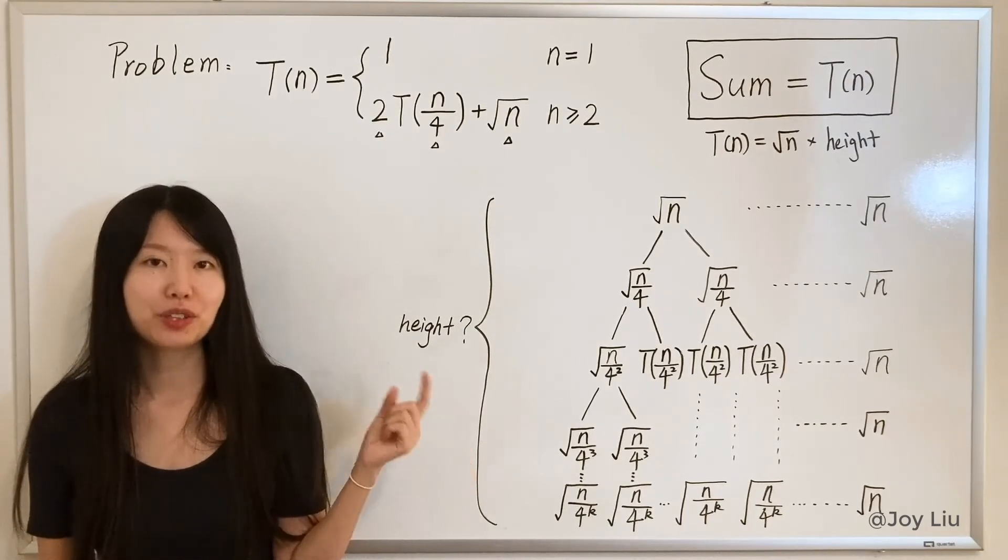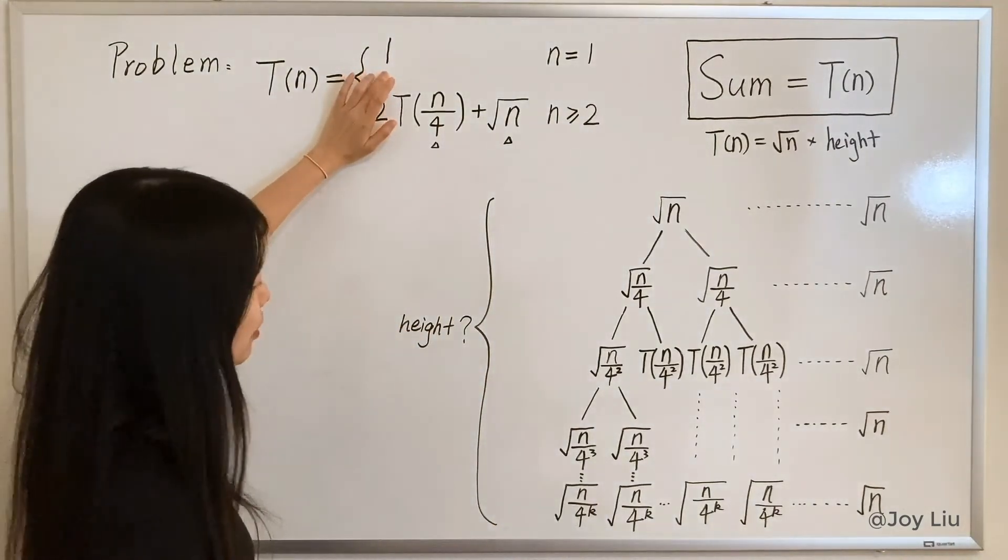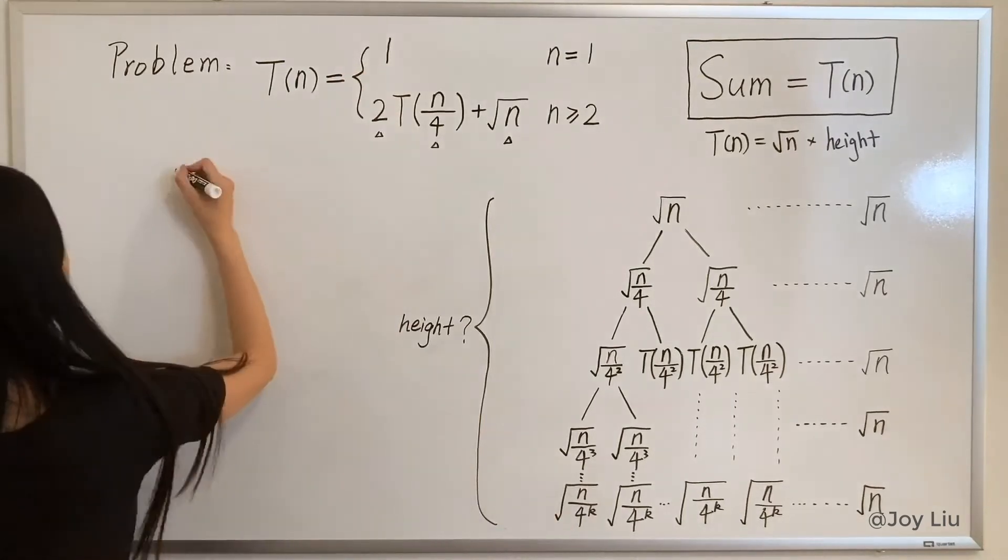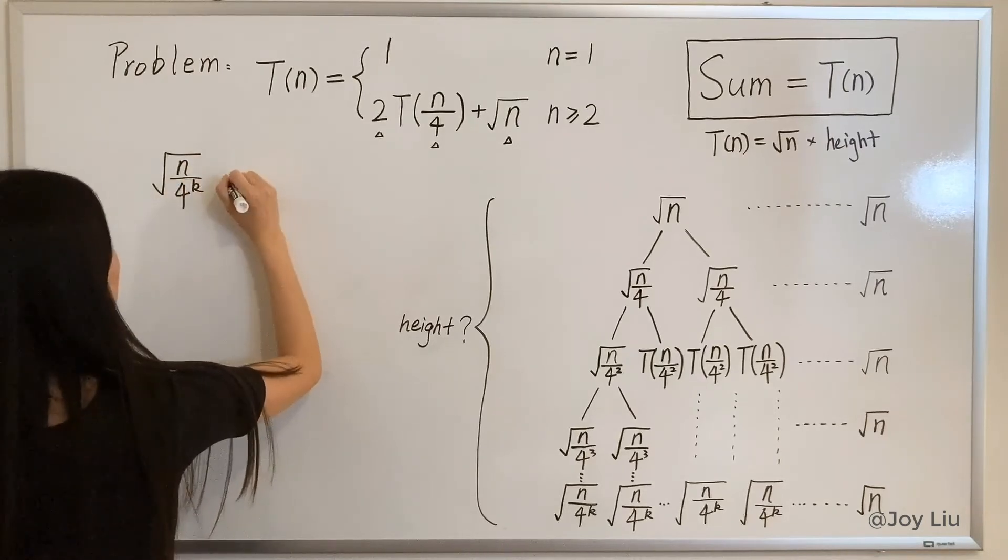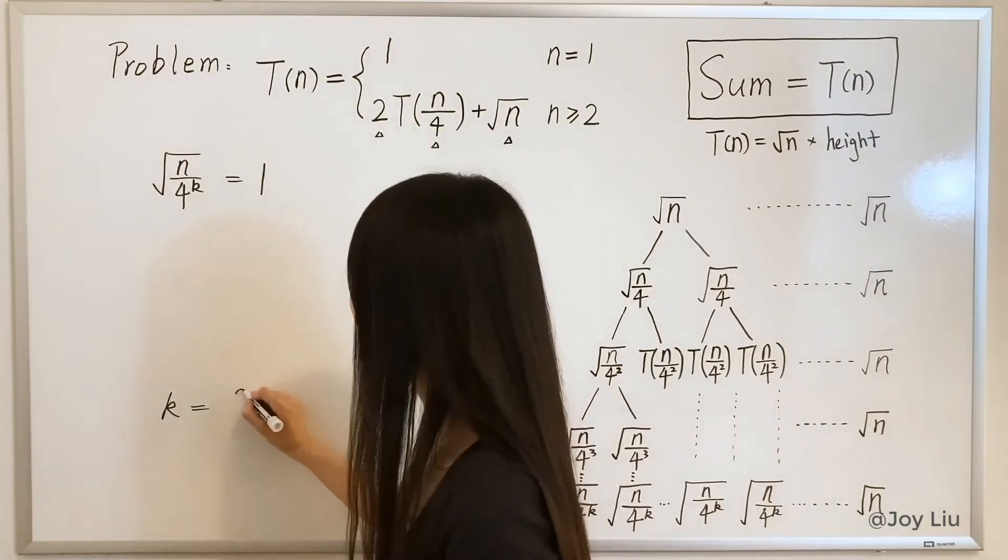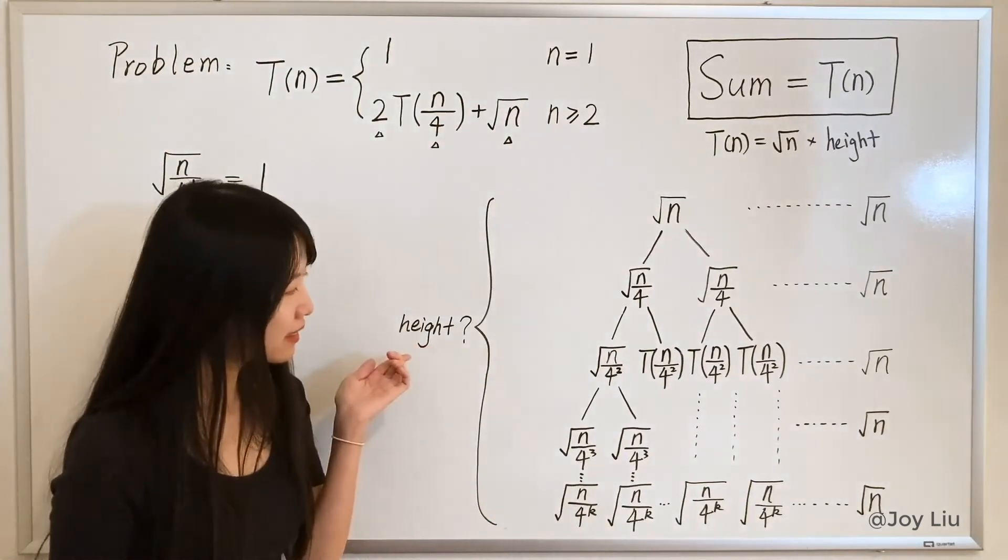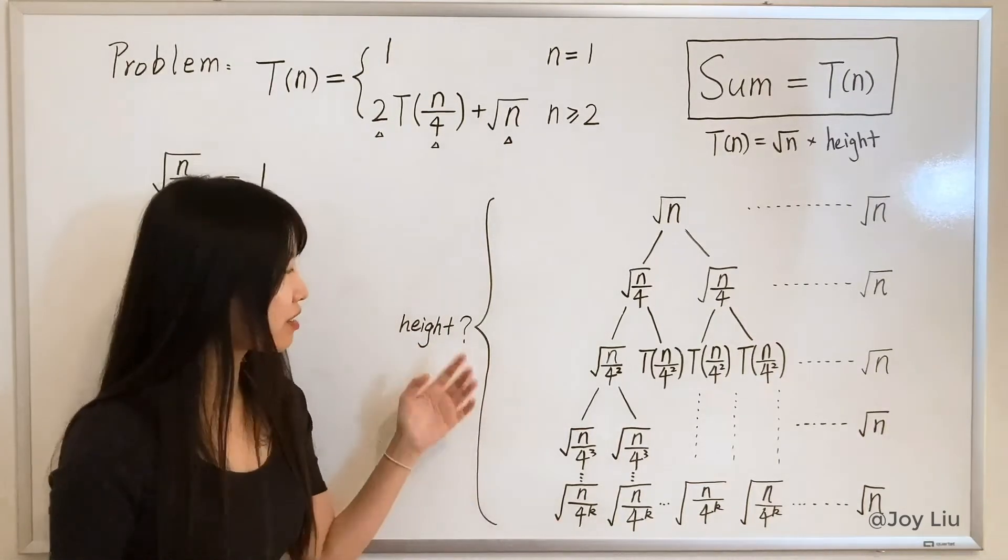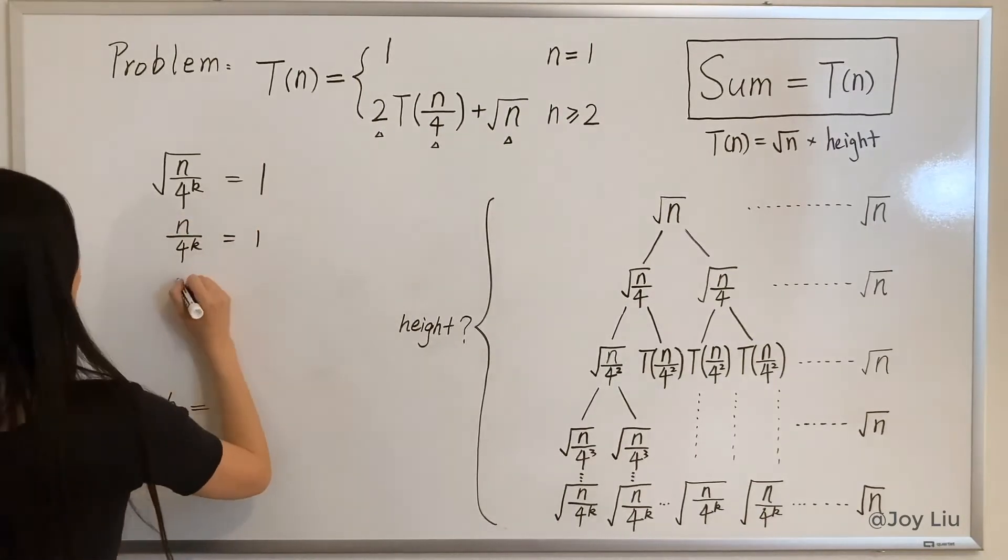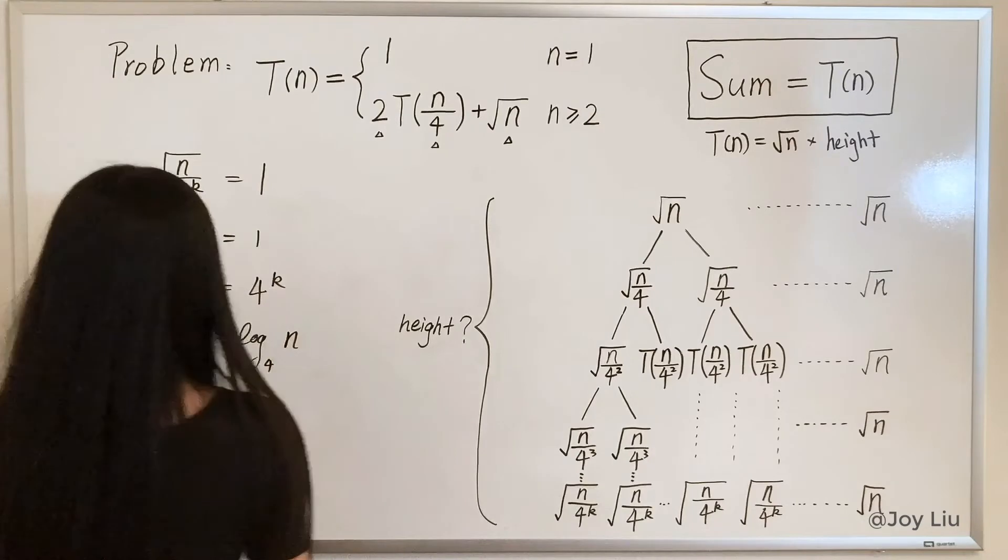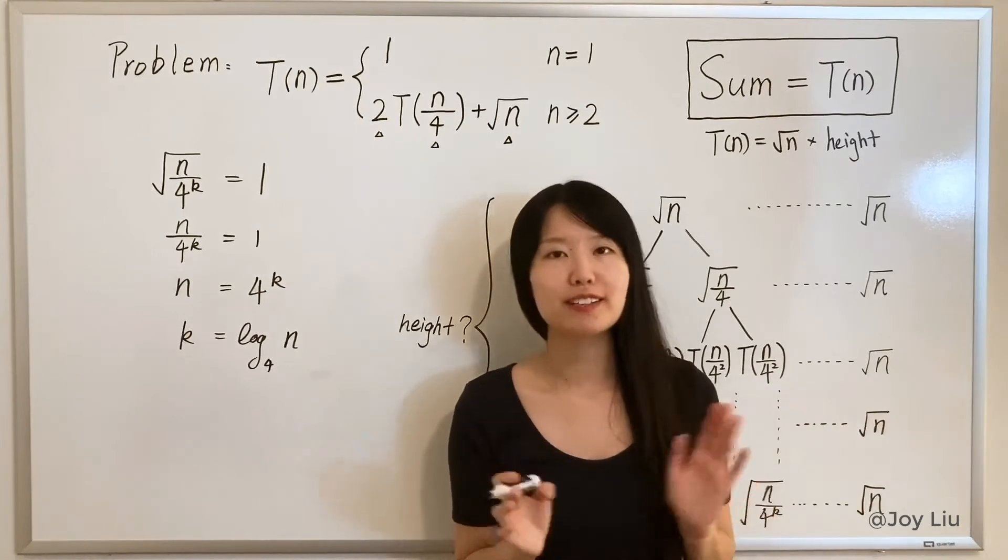The secret is base. So we already know that the base is 1, and we have the formula for the base. So we just use n divided by 4 to the K equals to 1, and in the end we will know what K is. So why we need to calculate K to get the height? The height, yes, because they are the same thing. It equals to log base 4 of n. This is the answer. Now we have everything we need to calculate T(n).